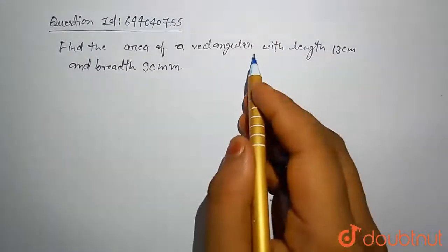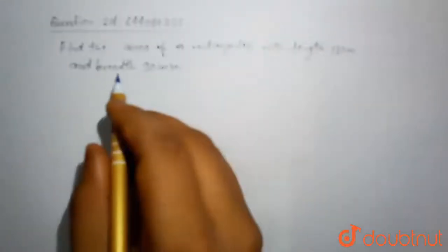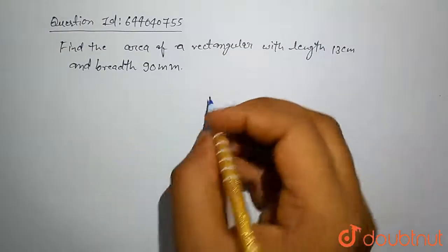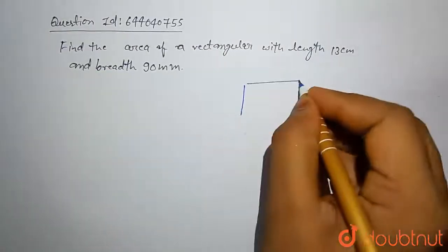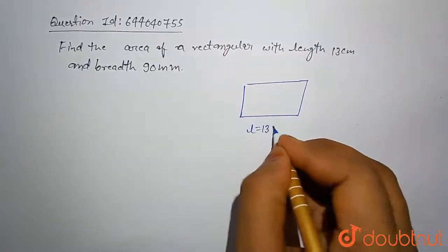Find the area of a rectangular with length 13 centimeter and width 90 millimeter. This is our rectangle body. Length is 13 centimeter.